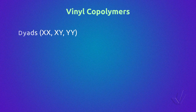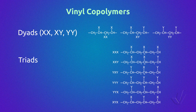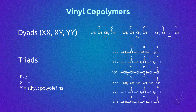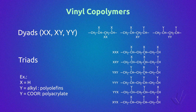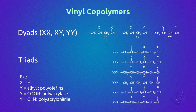We are going to apply the equations to vinyl copolymers. Vinyl copolymers are formed by a methylene carbon, a methine carbon that is asymmetric, and a substituent. If X is a proton and Y is an alkyl group, we have polyolefins — for example, in an ethylene-propylene copolymer, Y is a methyl. If Y is an ester, we can have a polyacrylate unit; if Y is a nitrile, we can have a polyacrylonitrile unit. All this family of copolymers will have three diads and six triads.